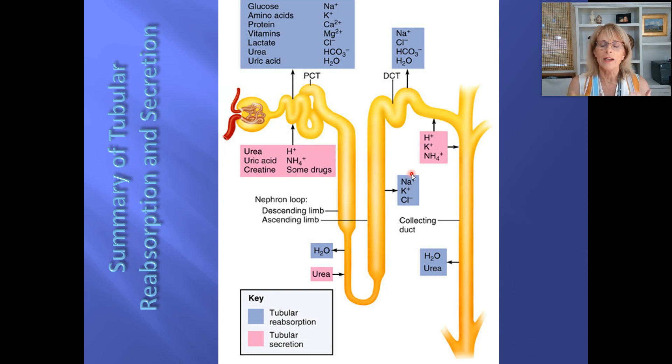So the way I look at it is I just think nephron loop, collecting duct, that's water. Distal convoluted tubule is going to be regulating pH by reabsorbing bicarbonate and maybe secreting hydrogen ions. And sodium and potassium, those guys go together. And the proximal convoluted tubule does everything. It's easier to remember what the distal convoluted tubule, collecting duct, nephron loop do, and then just everything else is proximal convoluted tubule.